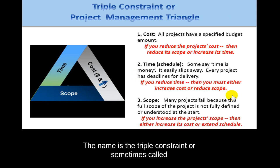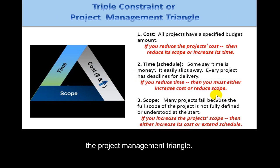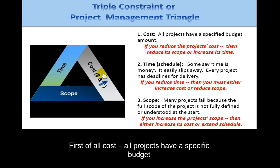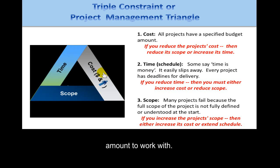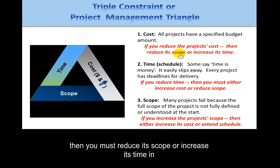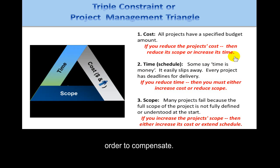The name is the Triple Constraint, sometimes called the Project Management Triangle. It has three components. First, cost — all projects have a specific budget amount to work with. If you reduce the project's cost, then you must reduce its scope or increase its time in order to compensate.